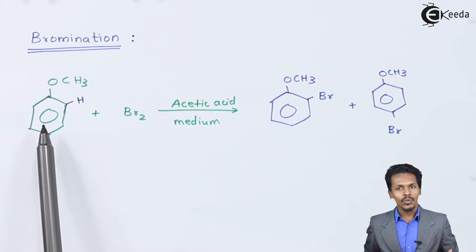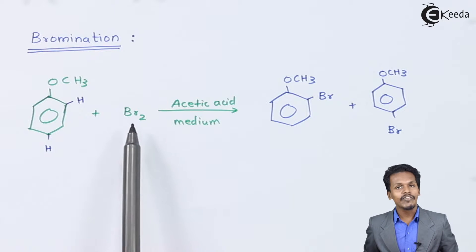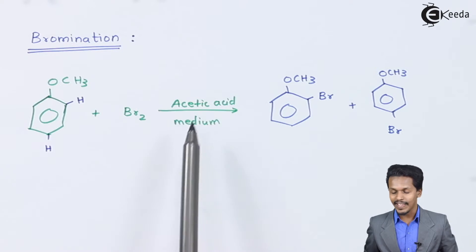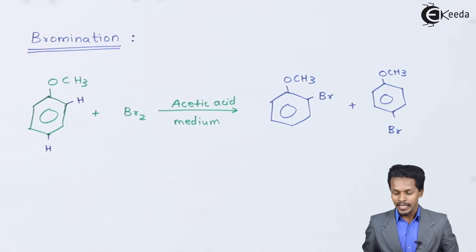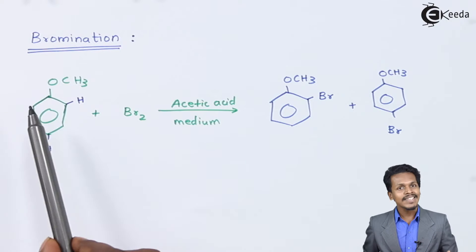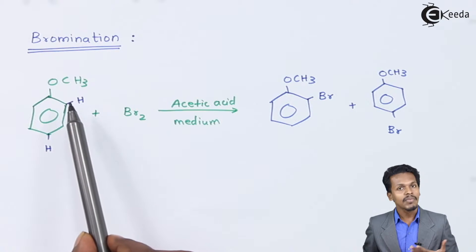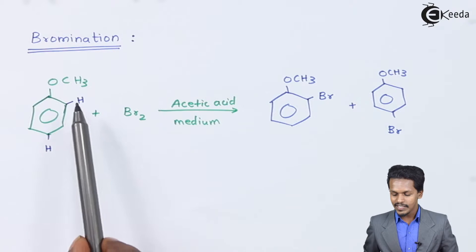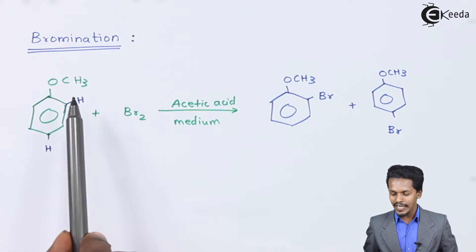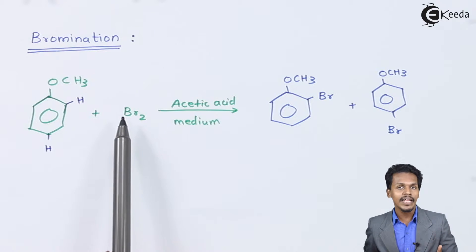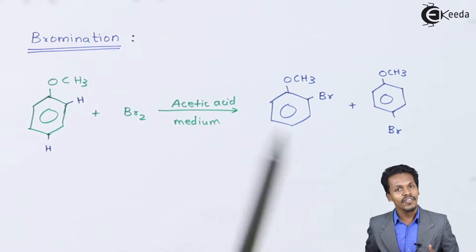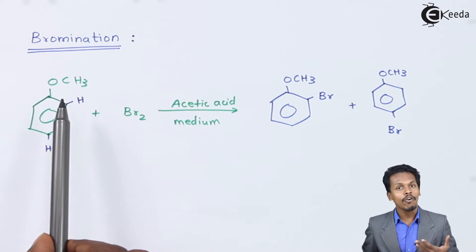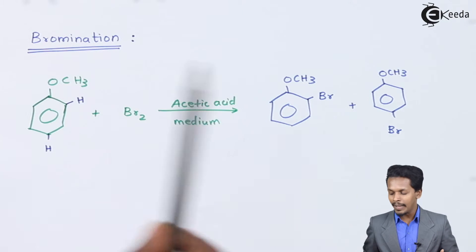In bromination, anisole is treated with a bromine molecule in the presence of an acetic acid medium. The benzene ring consists of ortho hydrogen as well as para hydrogen. One of the hydrogen atoms will be removed along with the bromine atom in the form of HBr, while the rest of the bromine atom attaches at the ortho position.